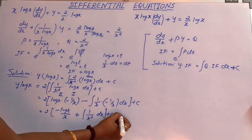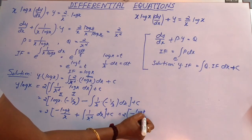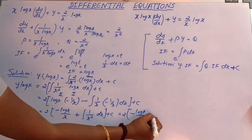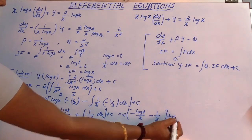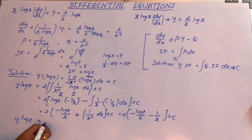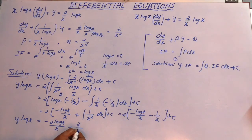This gives 2·(−log(x)/x + (−1/x)) + C. Therefore the final solution is y·log(x) = −2·log(x)/x − 2/x + C.